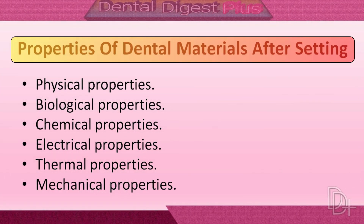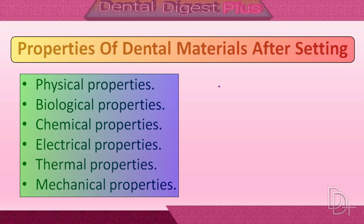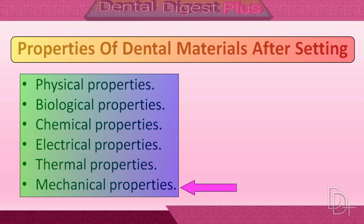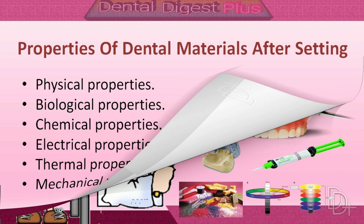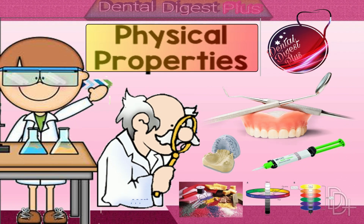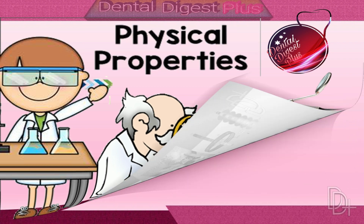Properties of dental materials after setting include physical properties, biological properties, chemical properties, electrical properties, thermal properties, and mechanical properties. Today we are going to learn about physical properties in detail.